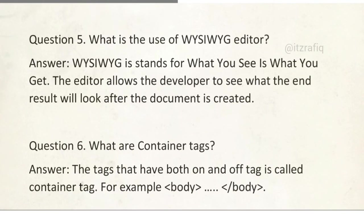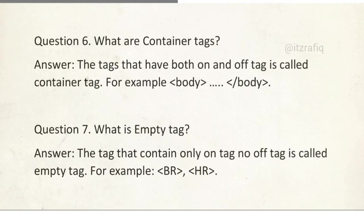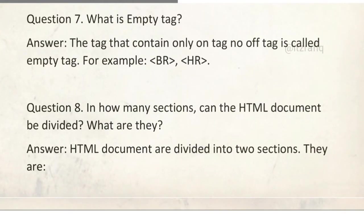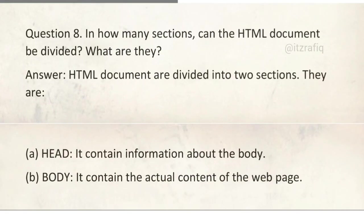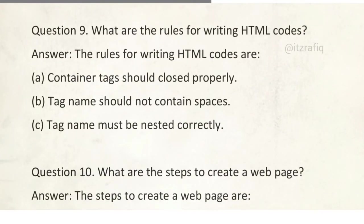Number 5: What is the use of what you see is what you get editor? This editor allows the developer to see what the end result looks like after the document is created. By using notepad we can't see that. What are container tags? The tags that contain both on and off tags are known as container tags. For example, body opening and body closing. What is empty tags? The tags which contain only on, no off tags, are called empty tags. For example, BR, HR. How many sections can an HTML document be divided? What are the rules for writing HTML codes? The rules for writing HTML codes are: container tags should close properly, tag names should not contain spaces, tag names must be nested correctly.